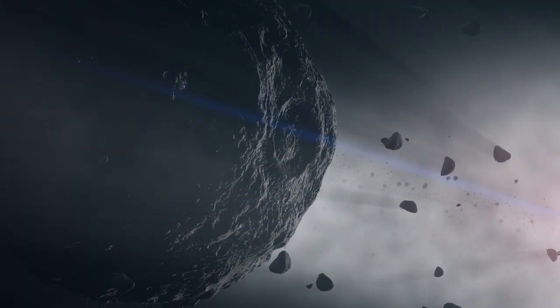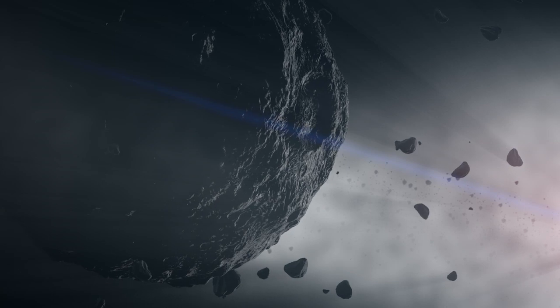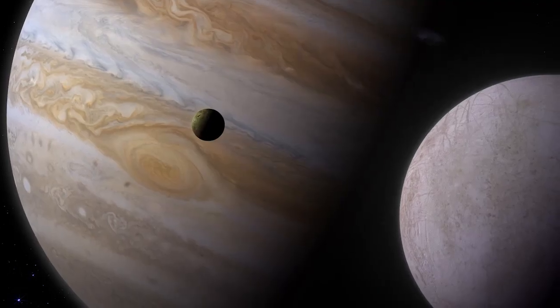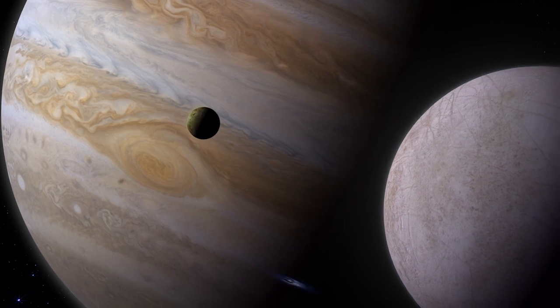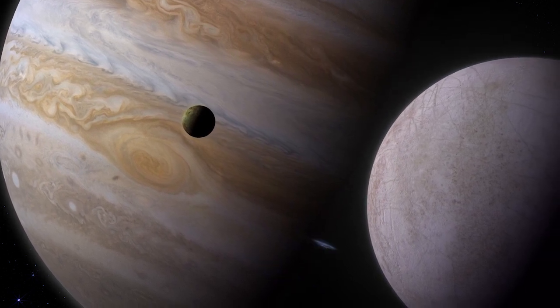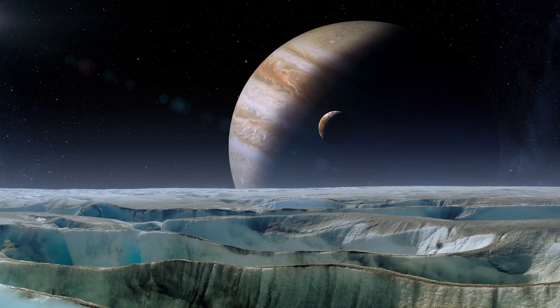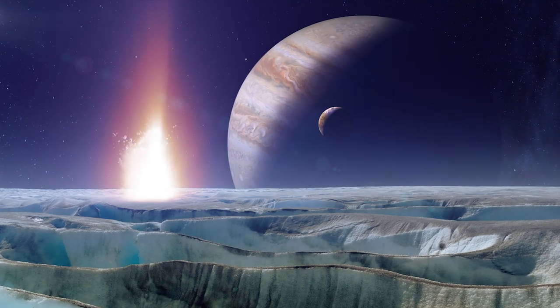Back in the asteroid belt, Bennu's parent body is lucky. It survives this period of heavy bombardment. The solar system cools and calms. Jupiter and its many moons assume the orbits that we see today. Billions of years of quiet follow. More or less.